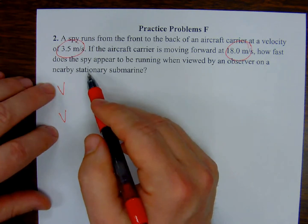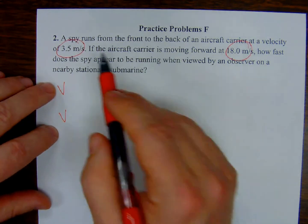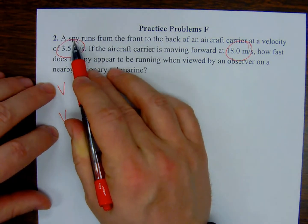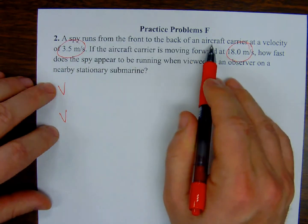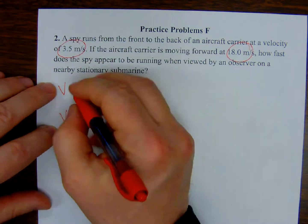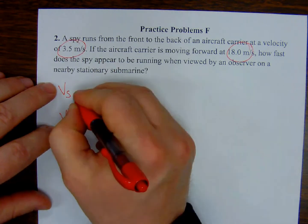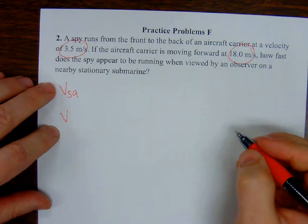The velocity of the spy running from the front to back of the aircraft carrier. So it's the spy with respect to the aircraft carrier. So I'm going to go sub-s-a. Now that is 3.5 meters per second.